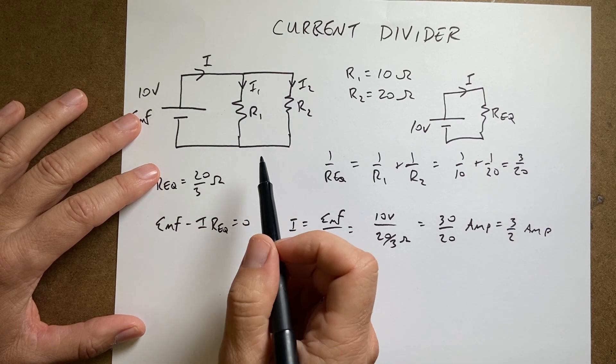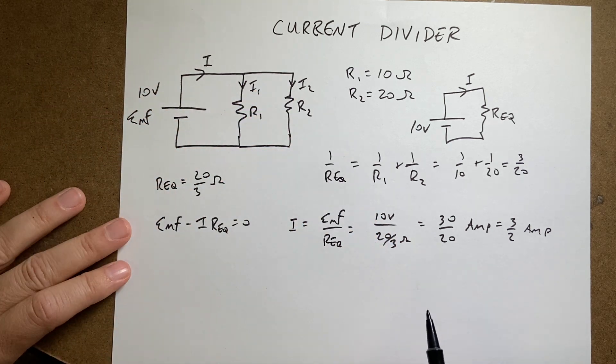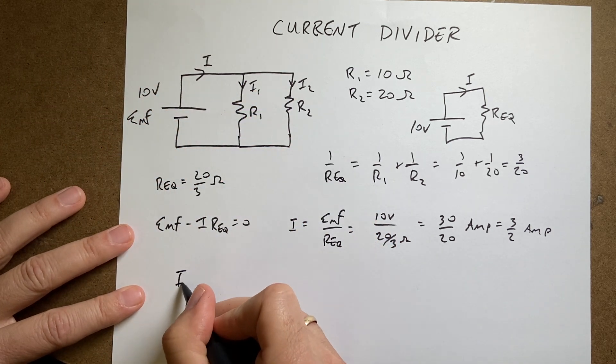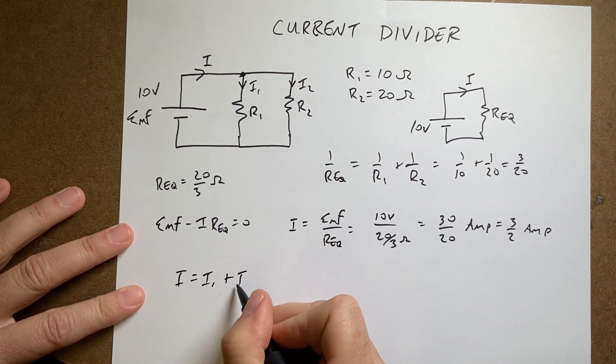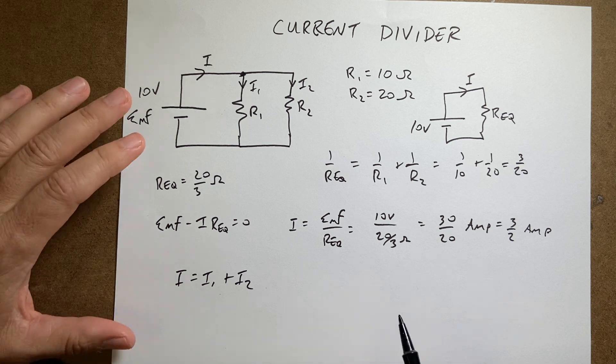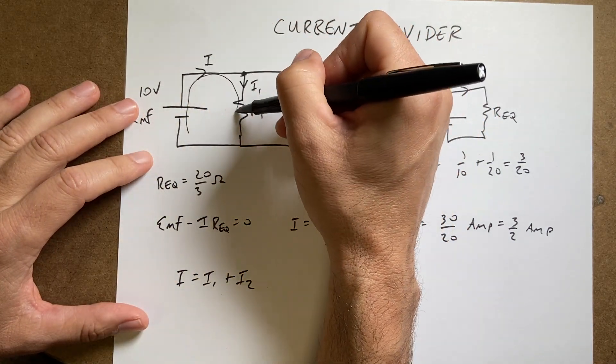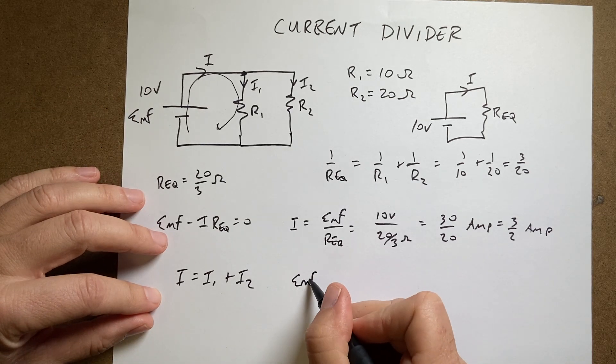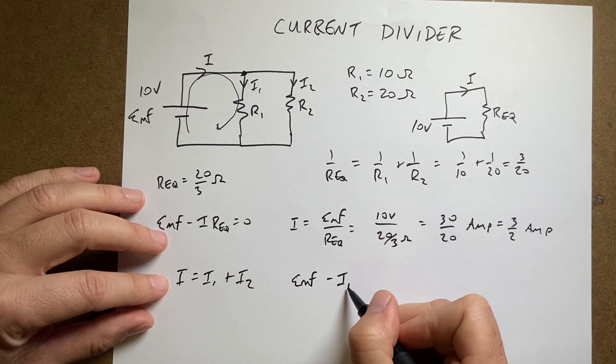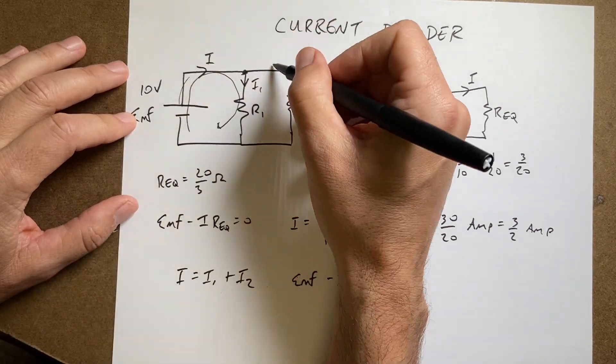Now, how much of that current is going through here and how much is going through there? Remember that the junction rule says that I into that node is equal to I1 plus I2. So if I do this loop for my loop rule, I get EMF minus I1 R1 equals 0. I can do that for this loop also.